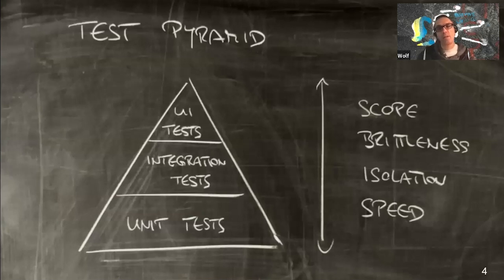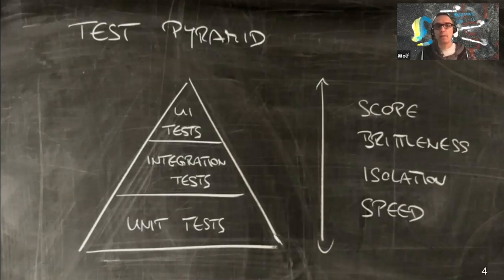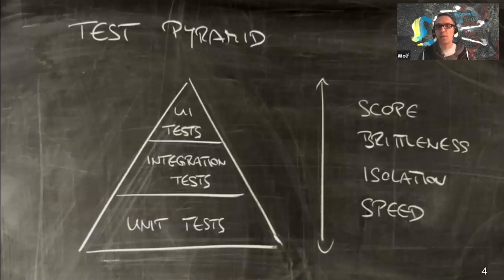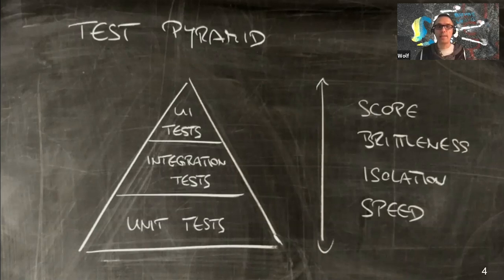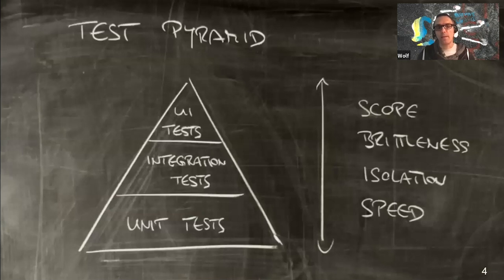Isolation describes how well you can pinpoint what's wrong when a test fails. For a UI test returning a 500 error, you have no idea which part of the system is failing. Integration tests have similar issues due to large scope. Unit tests offer super high isolation — if one fails, it's easy to pinpoint. Speed is the last factor: unit tests are much faster to run than integration or UI tests, giving us fast feedback as developers.